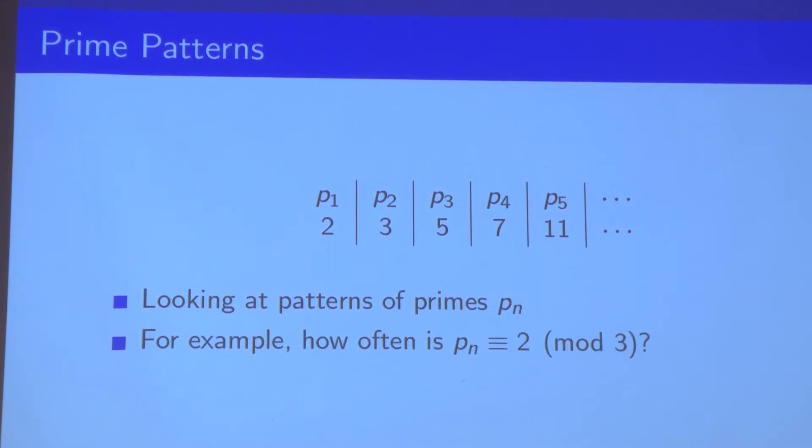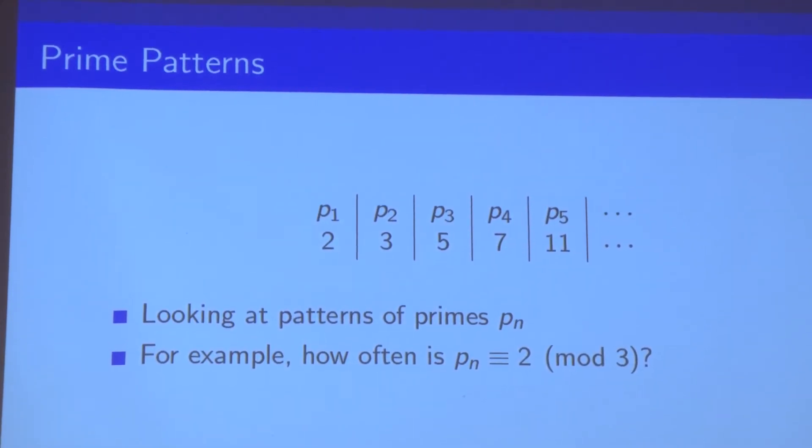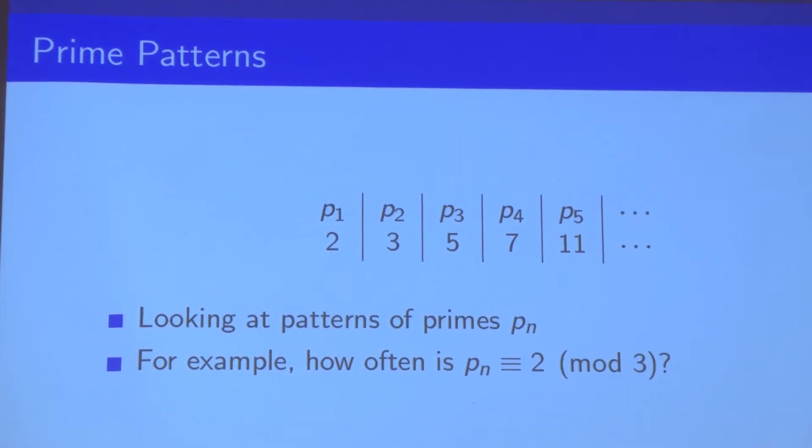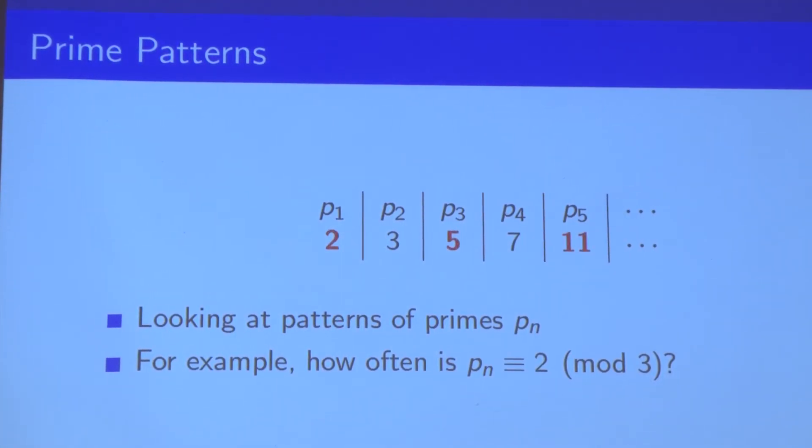The question we ask is, how often do primes leave a remainder of two when they're divided by three, or leave a remainder of one when divided by three? I'm going to highlight in the table the primes that leave a remainder of two when divided by three.